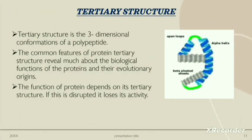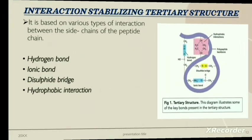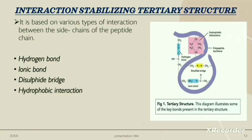Tertiary structure: the tertiary structure is the three-dimensional conformation of a polypeptide. The common features of a protein's tertiary structure reveal much about the biological function of the protein and their evolutionary origins. The function of protein depends on its tertiary structure; if this is disrupted, it loses its activity. The interactions involved in stabilizing the tertiary structure include hydrogen bonds, ionic bonds, disulfide bridges, and hydrophobic interactions.